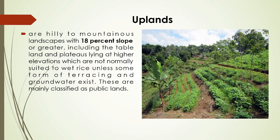Uplands are hilly to mountainous landscapes with 18% slope or greater, including tablelands and plateaus lying at higher elevations which are not normally suited to rice unless some form of terracing and groundwater exists. These are mainly classified as public lands. An example of upland farming is contour farming, which we will discuss later.